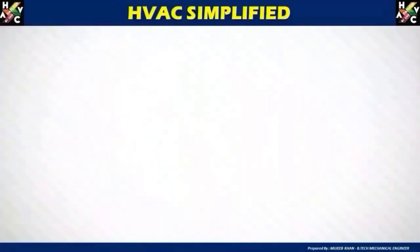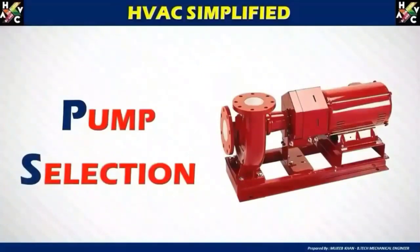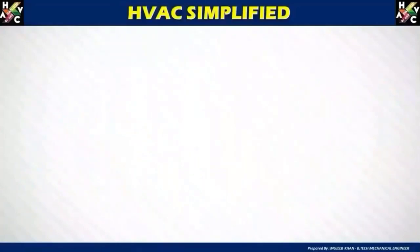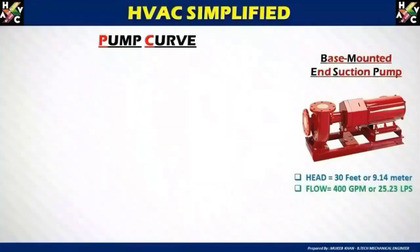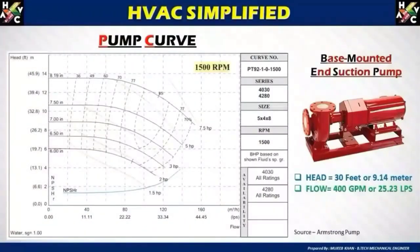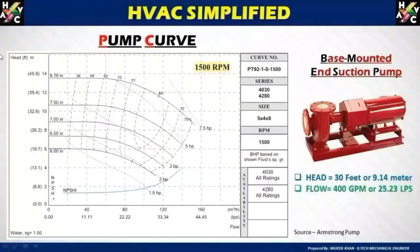Now let's see how to select the pump based on the pump curve provided by the pump manufacturer. For any pump selection, the manufacturer will provide a pump curve from which you select the pump. For our example of 30 feet head and 400 GPM — 30 feet equals 9.14 meters and 400 GPM equals 25.23 liters per second — here you can see a pump curve taken from Armstrong pumps. On the x-axis is GPM or flow in liters per second, and on the y-axis is the pump head in feet or meters.